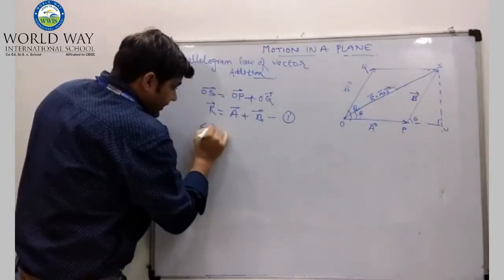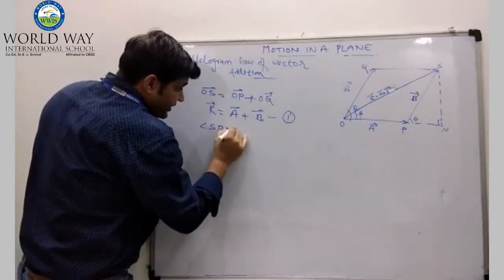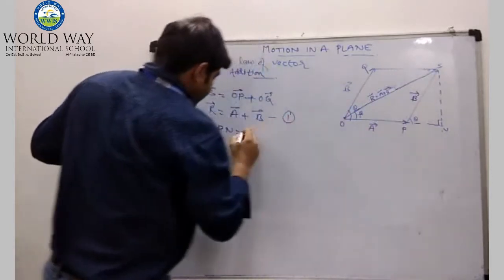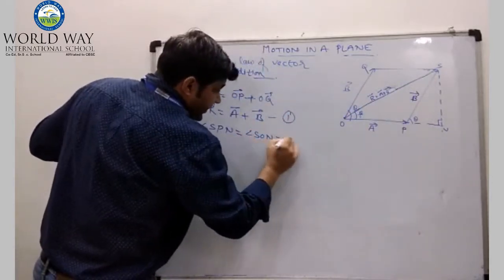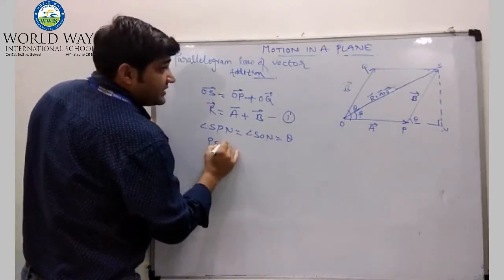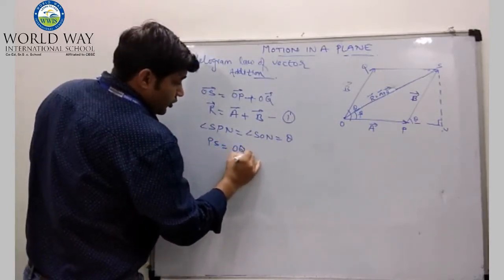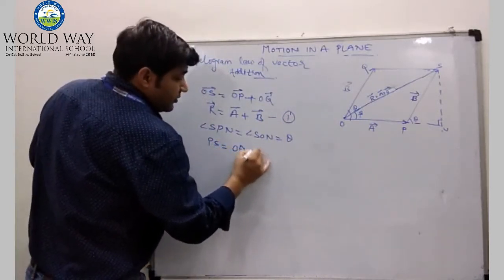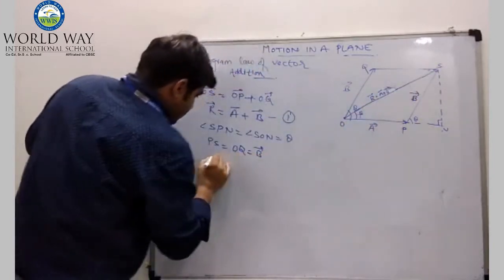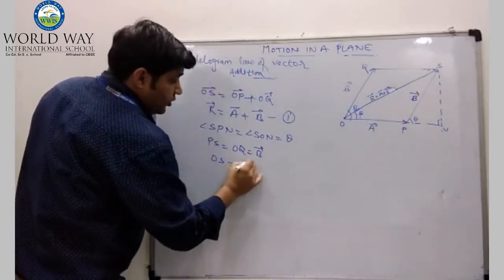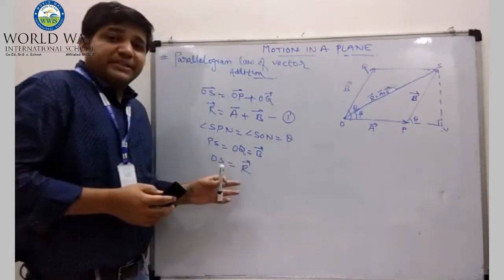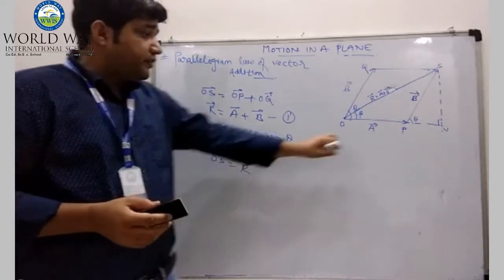In the same figure, at points P and N, angle SPN equals angle SON, which equals theta. Also, PS equals OQ equals B, and OS equals R. This is the notation we are using.